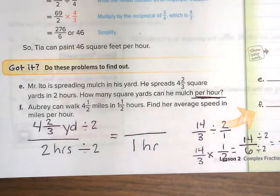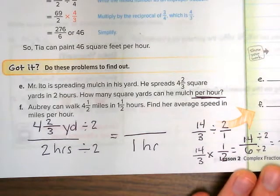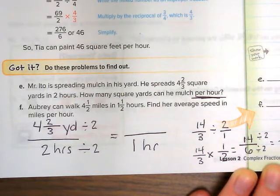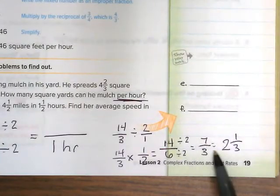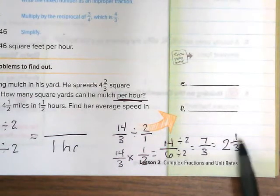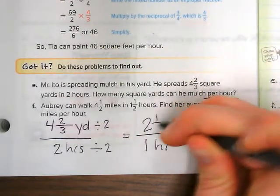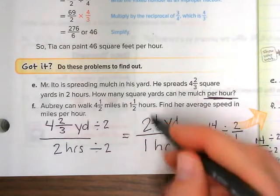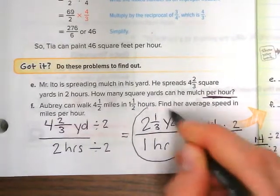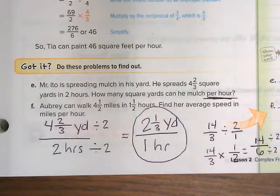Now we have an improper fraction. I want to make this back to a mixed number. 3 can go into 7 two times. And then there's 1 third left. 7 thirds equals 2 and 1 third. Let's bring that answer back over here. 2 and 1 third yards per hour. And that's our answer. Mr. Ito can mulch 2 and 1 third yards per hour.